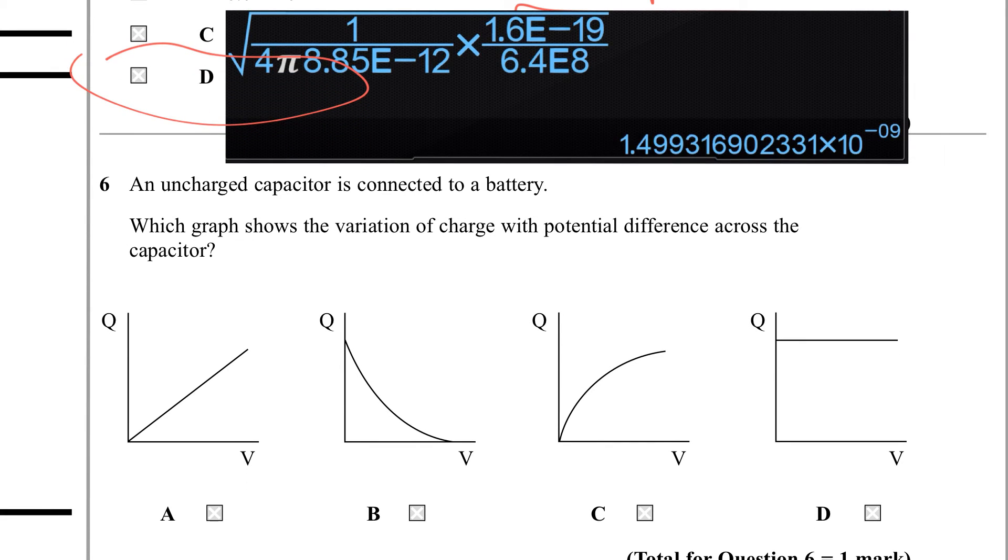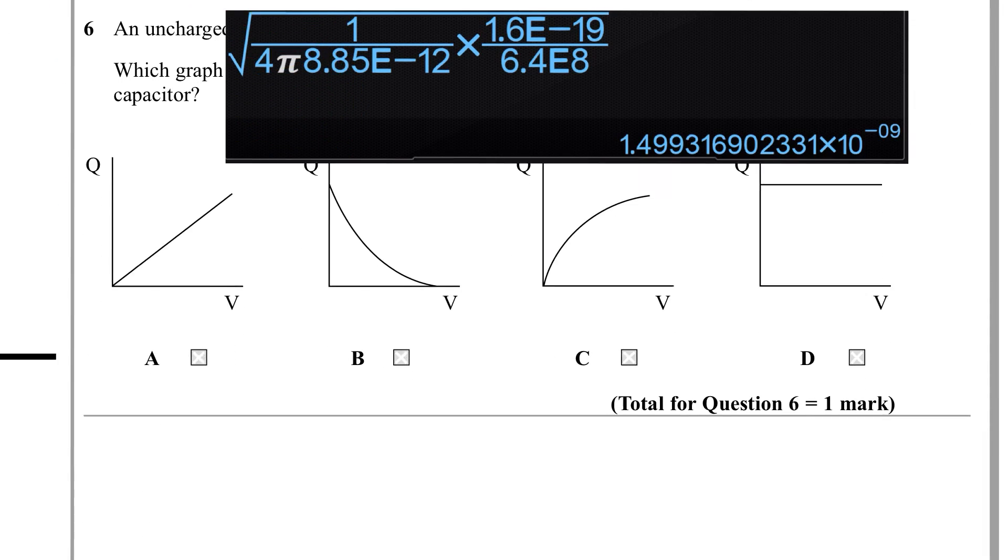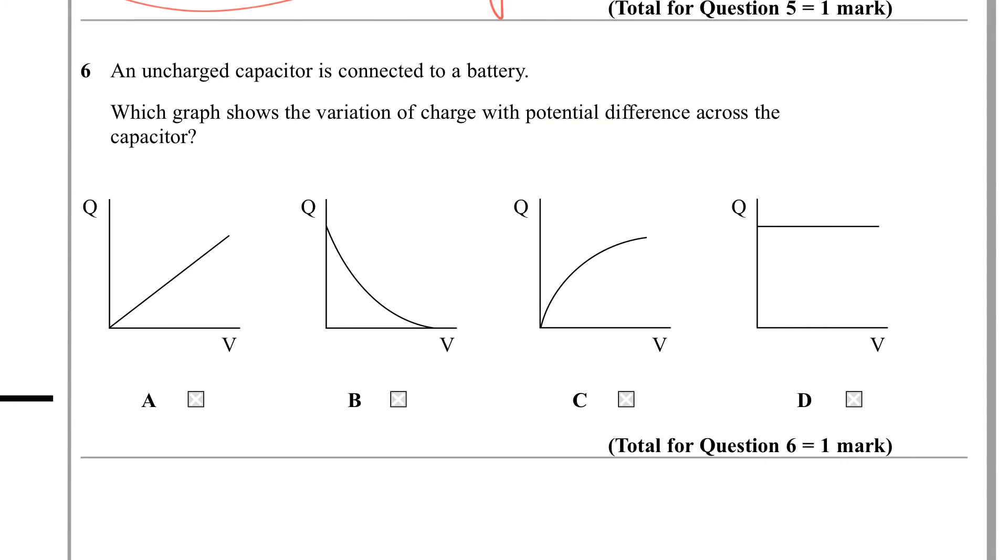Question 6. An uncharged capacitor is connected to a battery. Which graph shows the variation of charge with potential difference across the capacitor? So this relates to your capacitor equation q equals cv. And what that's saying basically is this is in the form of y equals mx, because the capacitance of a capacitor is going to be a constant. So this is like the equation of a straight line. So it's going to be this one.